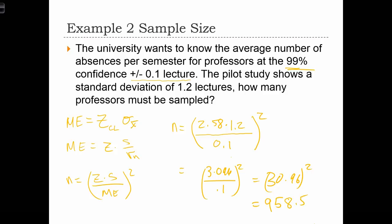Therefore, to be 99% confident of the number of absences per professor, with a margin of error of just one-tenth of a lecture, the university will need to sample 959 professors.